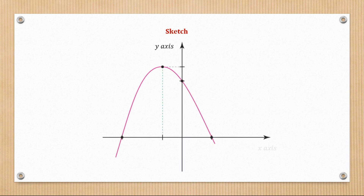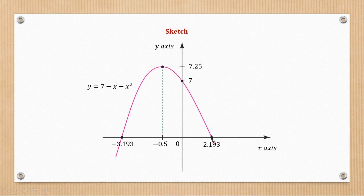To sketch this curve, first plot the different intercepts as shown — these are your intercepts here, another intercept here, and another intercept there. Then place your turning point right there. As you can see everything matches, and that's how you sketch this curve.